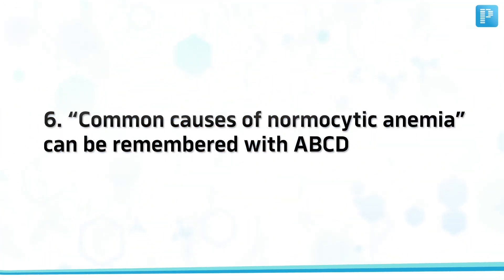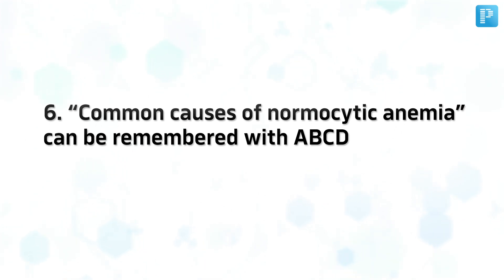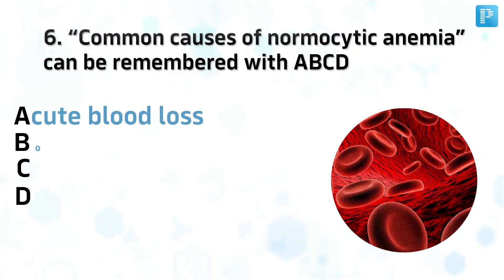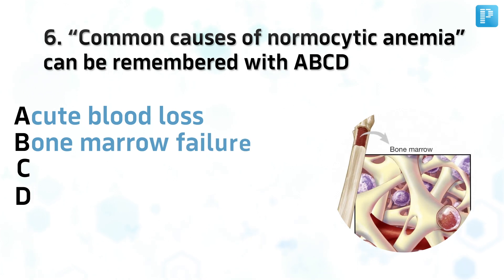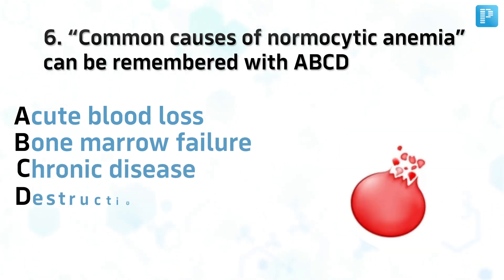Number 6. Common causes of normocytic anemia can be remembered with ABCD: Acute blood loss, bone marrow failure, chronic disease, destruction.